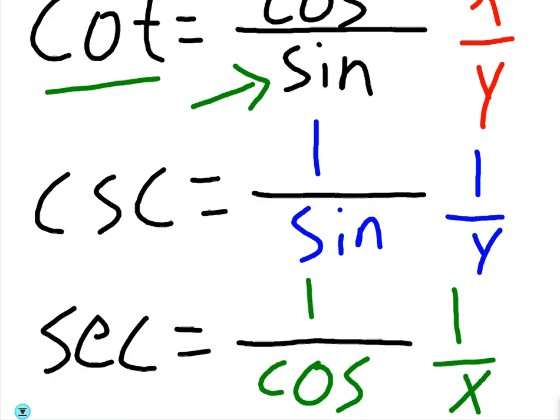Secant can be written as one over sine. I mean, cosecant can be written as one over sine. Therefore, it has a denominator of sine, just like cotangent. And secant can be written as one over cosine. Therefore, it has a denominator of cosine, just like tangent.